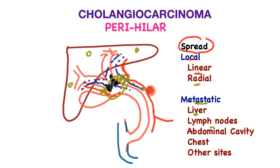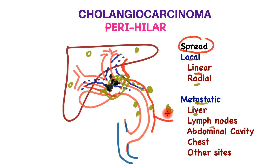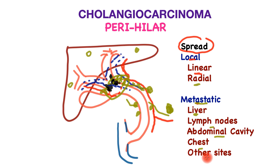Lymph nodes — small nubbins of tissue important in immunity and regulating lymph flow — can catch cancer cells, typically along the bile duct but also in more distant zones, indicating metastatic disease. In later stages, these cancers spread to the abdominal cavity, the chest, and other distant sites.